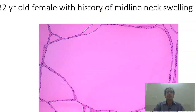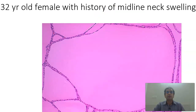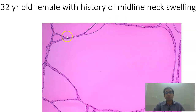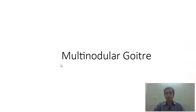Another very common slide that all examiners love: a 32-year-old female with history of midline neck swelling. You have acini filled with colloid and flattened cuboidal cells. This is a colloid goiter — multinodular goiter.